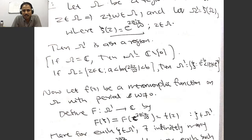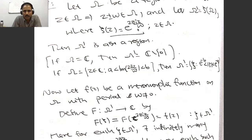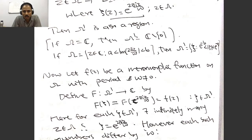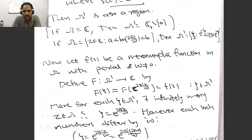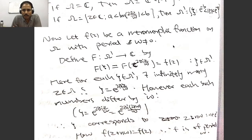This is rather easy. We start from a region Ω with the property that if z is in Ω then z plus or minus omega is also there, so that we can consider f(z + ω) and f(z - ω). And Ω' is the range of Ω under the map exp(2πiz/ω). If Ω is the whole complex plane, Ω' is ℂ minus {0}, and if Ω is a strip, then Ω' is the corresponding annulus. We start from a meromorphic function on Ω with period ω not equal to zero.